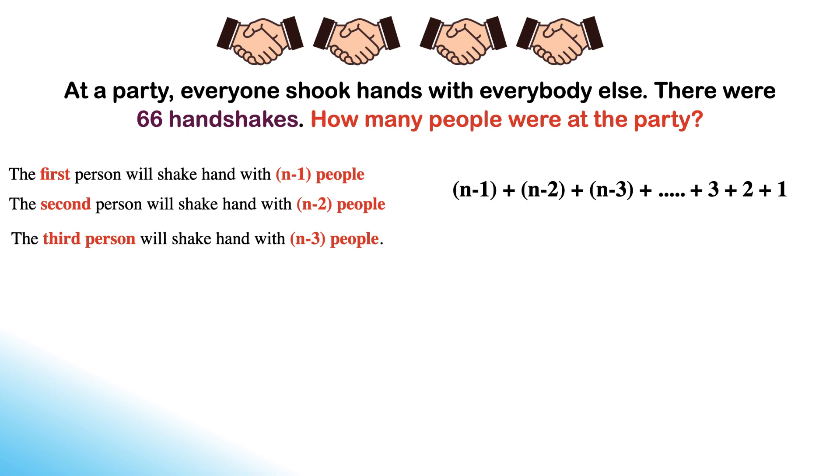We know that the sum of natural numbers formula is obtained by using the arithmetic progression formula, where the common difference between the preceding and succeeding numbers is 1.